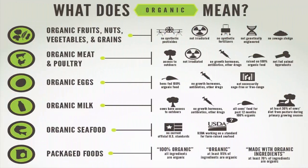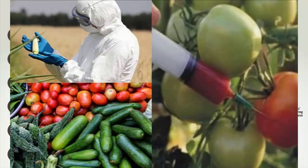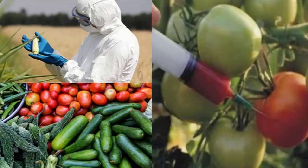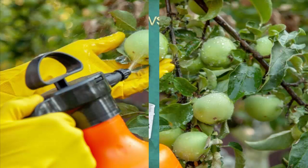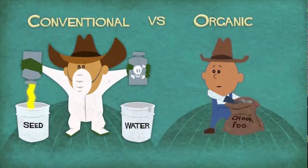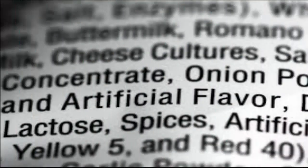Conventional or inorganic food, on the other hand, is food grown using hormones, genetic modifications, antibiotics, artificial chemicals, synthetic pesticides and fertilizers. It also includes artificial additives like preservatives, flavorings, sweeteners, and coloring.